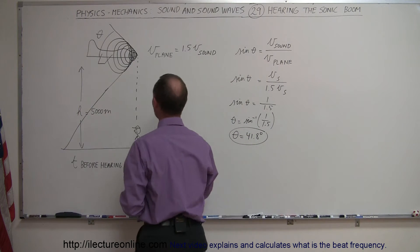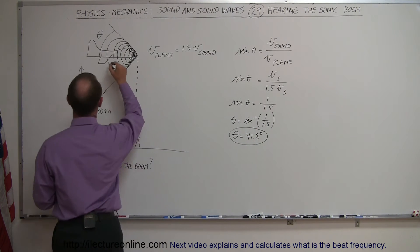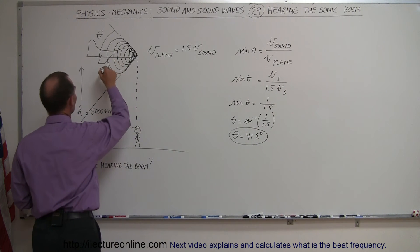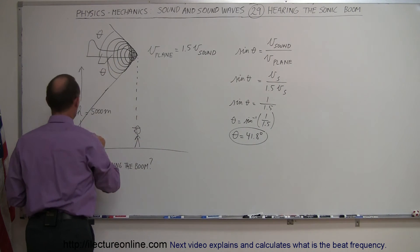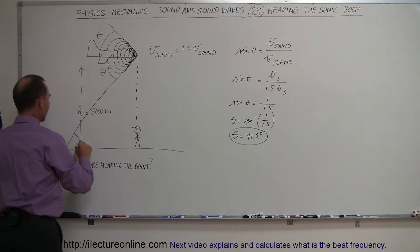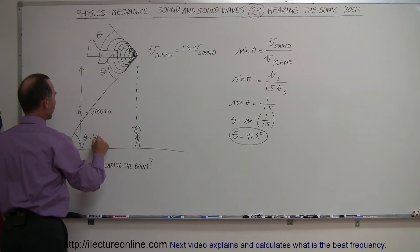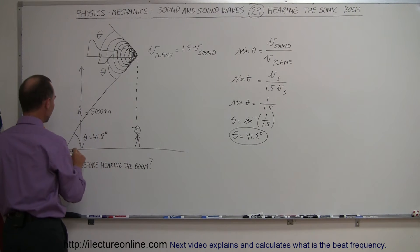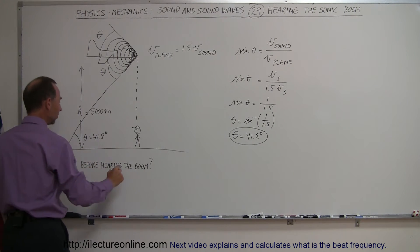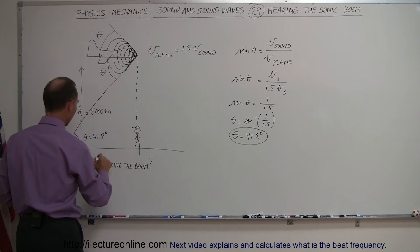So theta equals 41.8 degrees — that's this angle right here. This angle here is theta, and that means this angle here is theta as well, which is 41.8 degrees. That means we can figure out this distance.